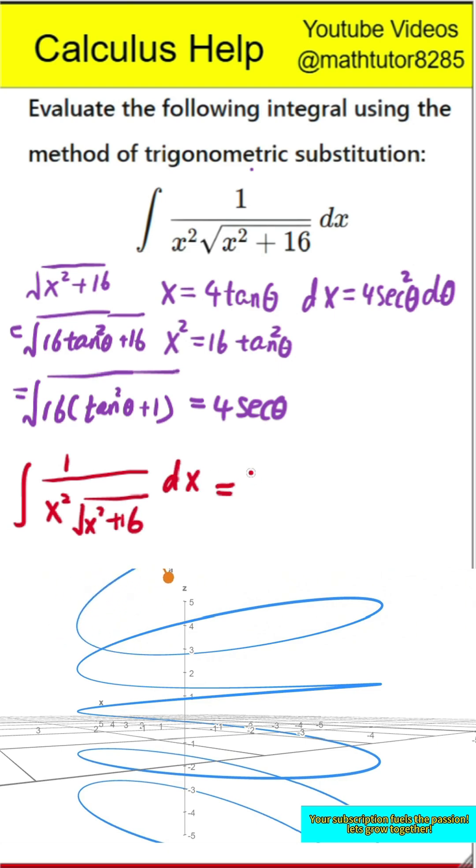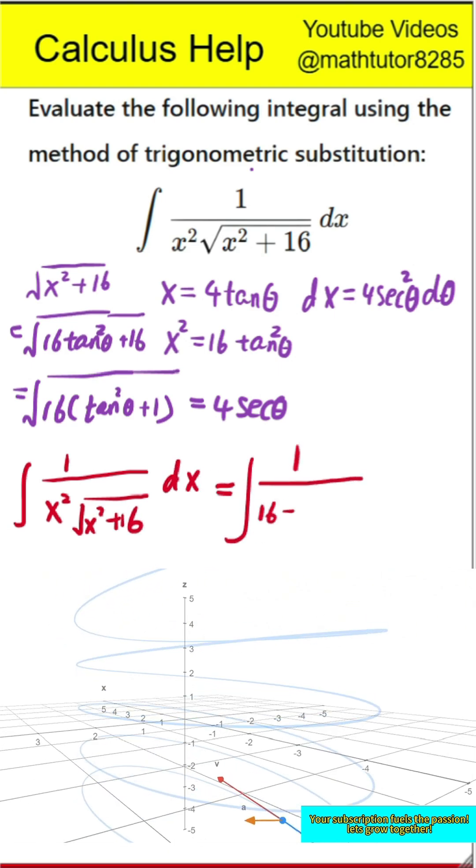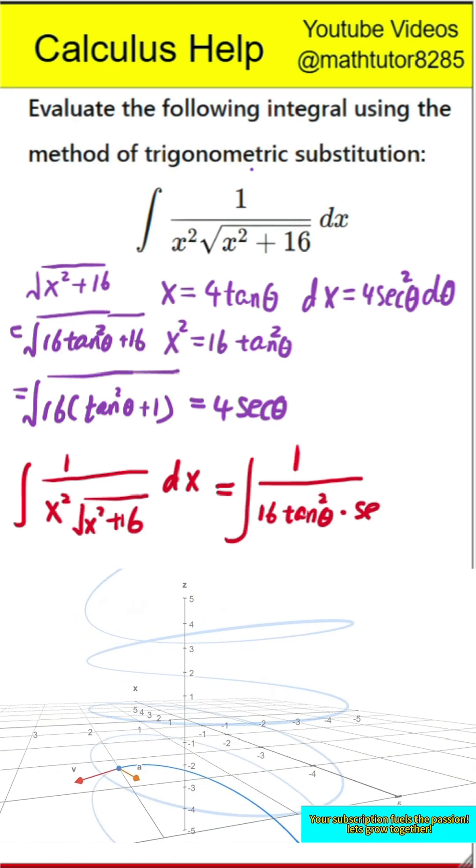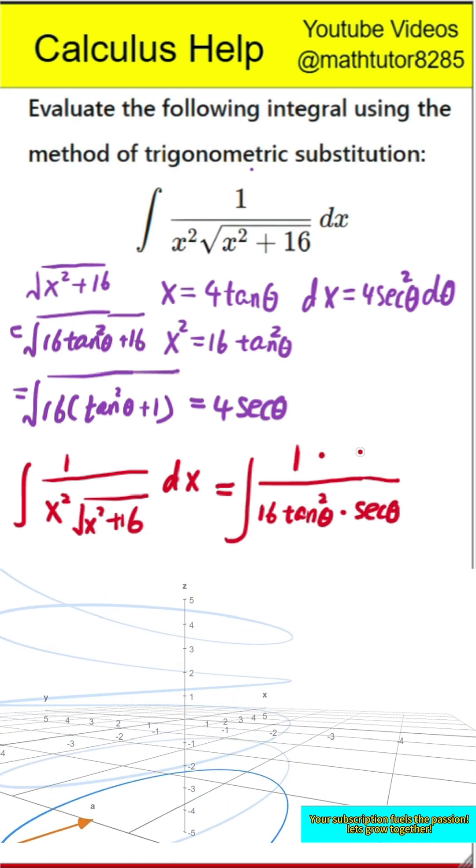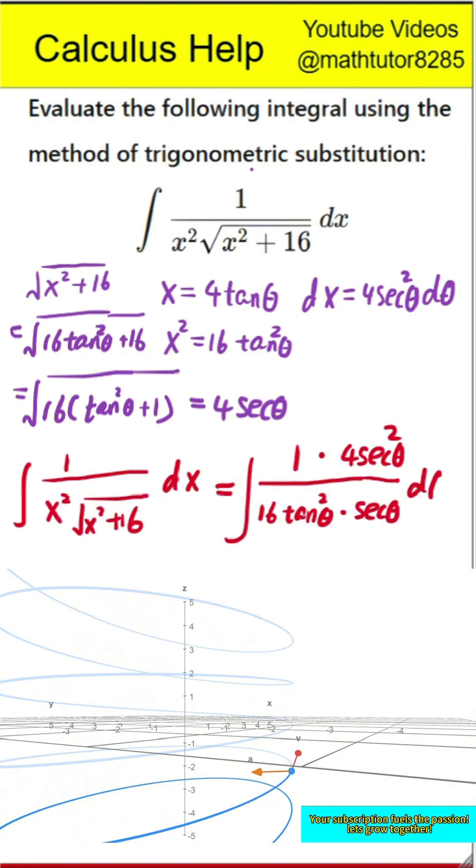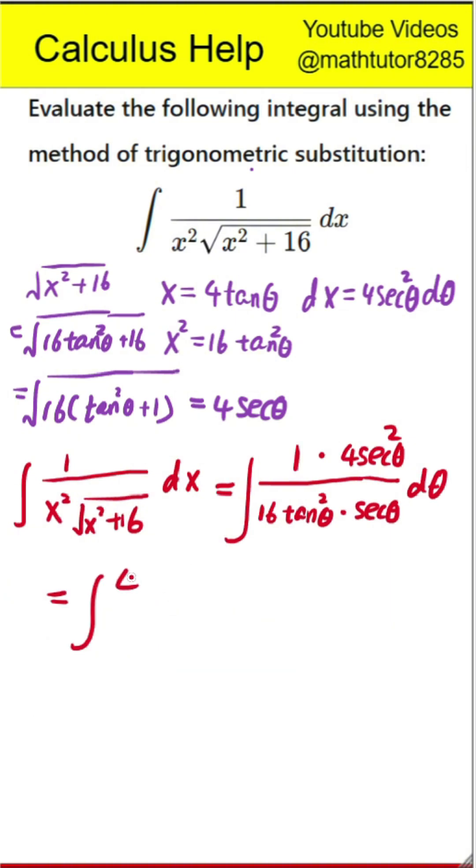Putting it all together, we now have the integral of 4 times secant squared theta divided by 64 times tangent squared theta times secant theta d theta. Simplifying, we get the integral of secant theta divided by 16 times tangent squared theta d theta.